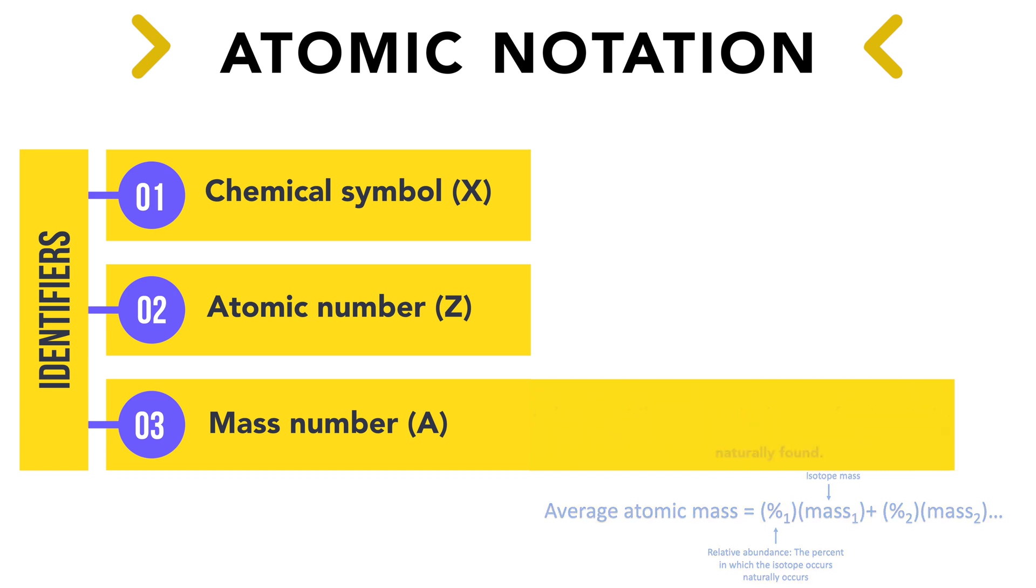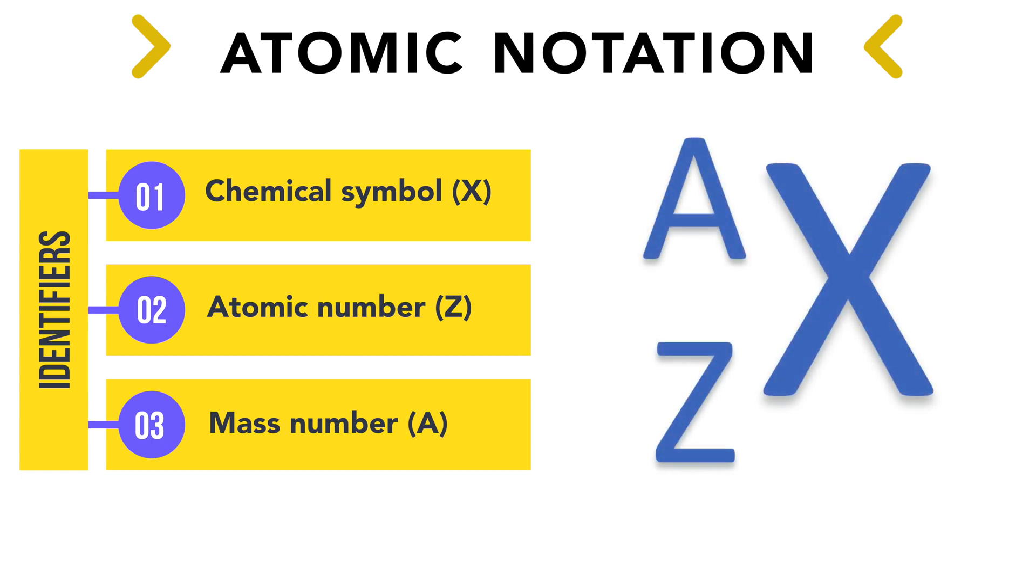When referring to an atom or isotope, there are certain notations we can use to specify the atom we're referring to. We start off by writing the chemical symbol, then the atomic number, often denoted as Z, as a subscript to the left, and finally, the mass number, often denoted by A, as a superscript to the left.